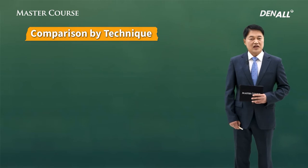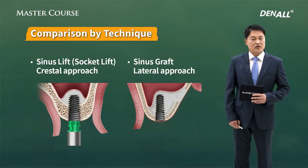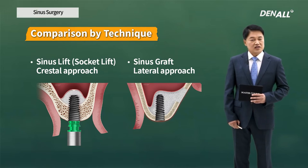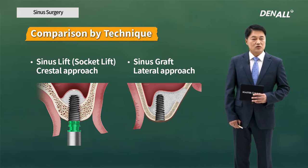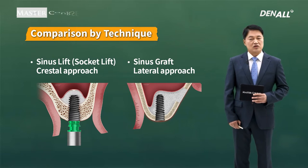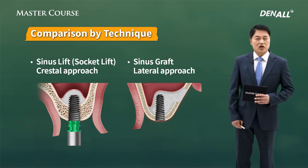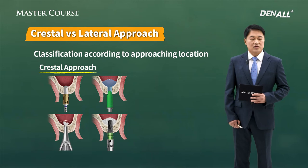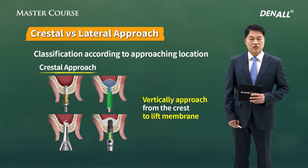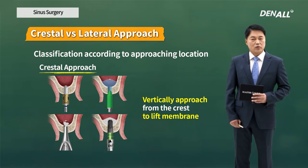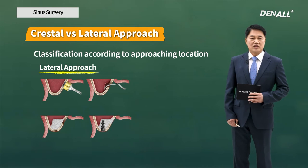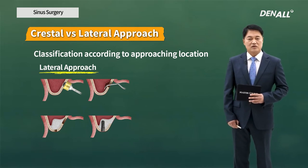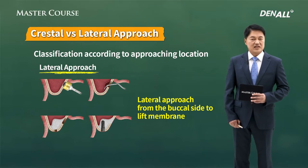Let's compare the techniques. They can be divided into crestal approach and lateral approach. The crestal approach refers to socket-lift or sinus-lift, and lateral approach sinus surgery refers to sinus graft. Depending on where you approach, you call it crestal approach or lateral approach. In the crestal approach, you approach the sinus from the crest and lift the membrane. In the lateral approach, you approach via the lateral wall, lift the membrane, and do bone graft.